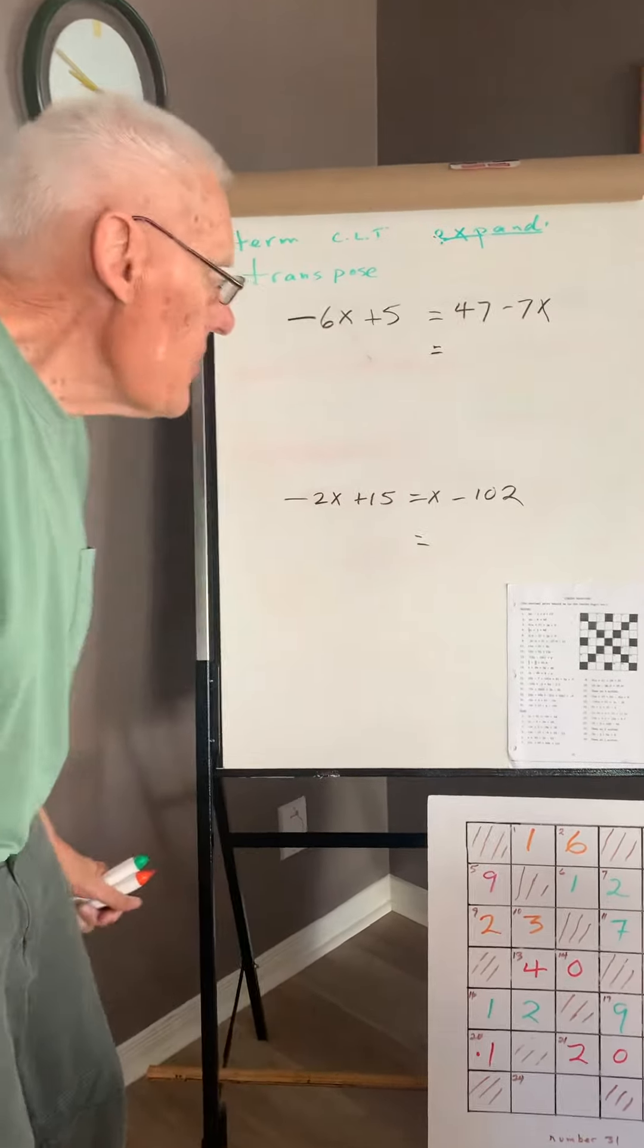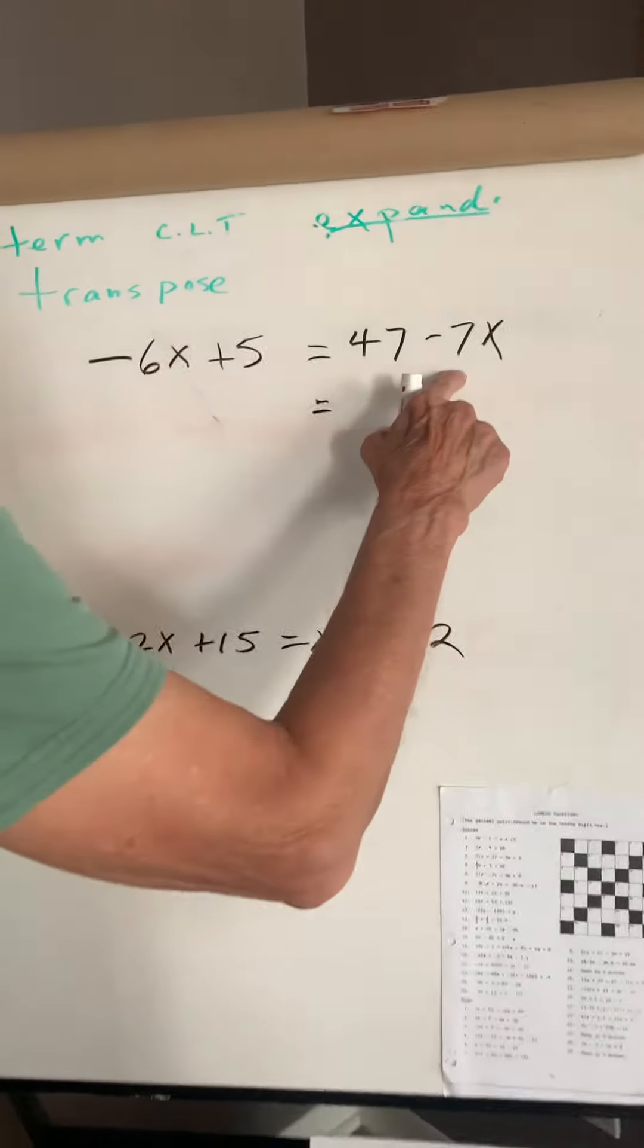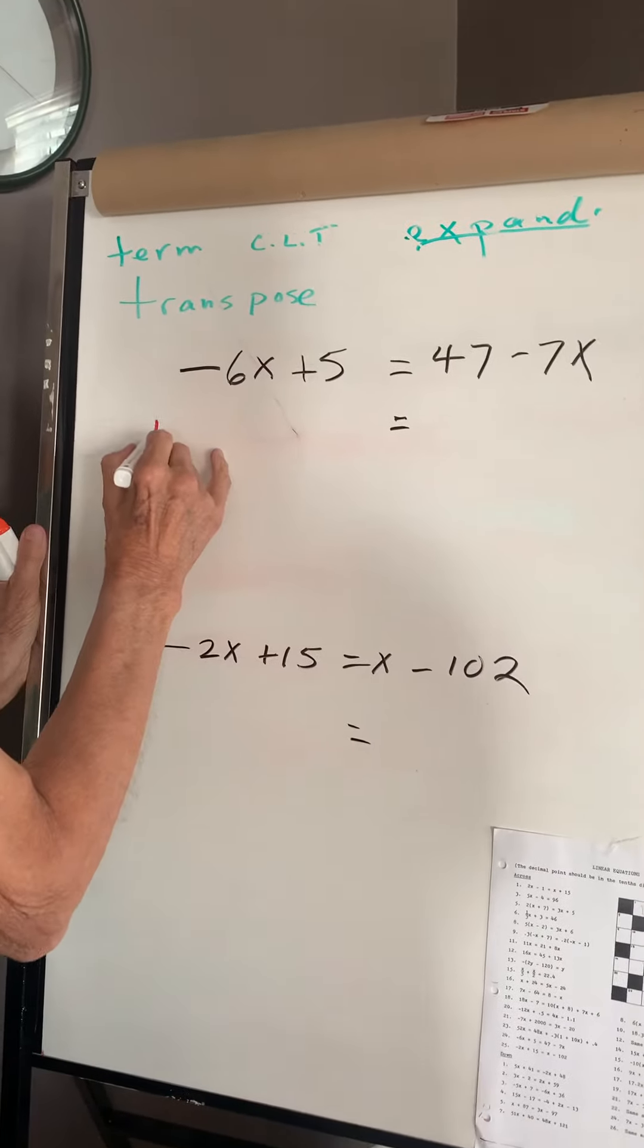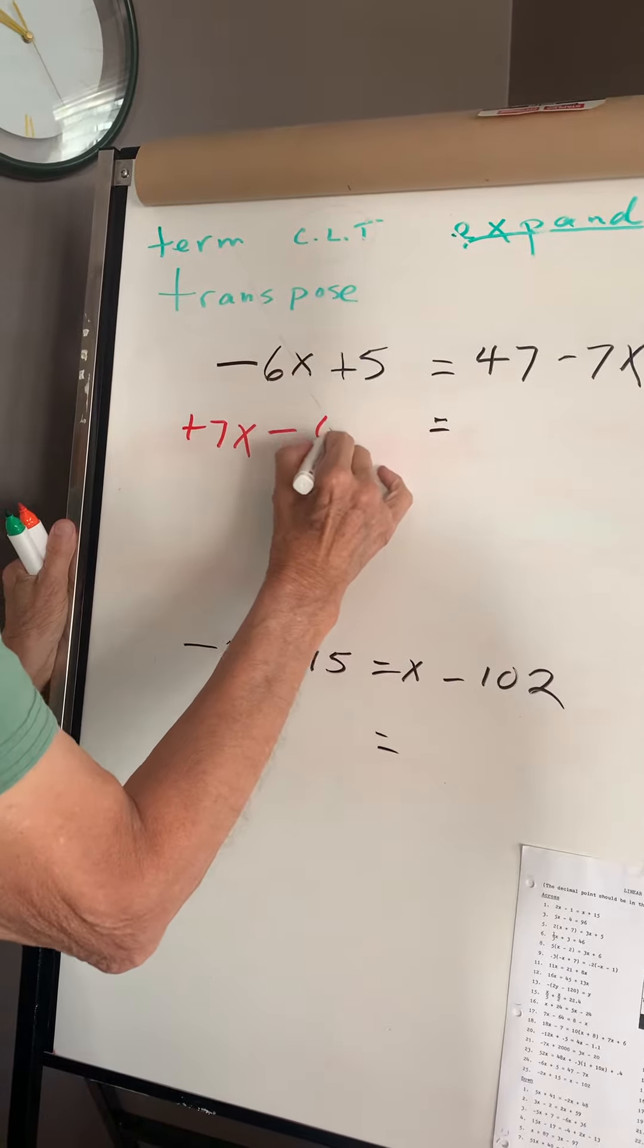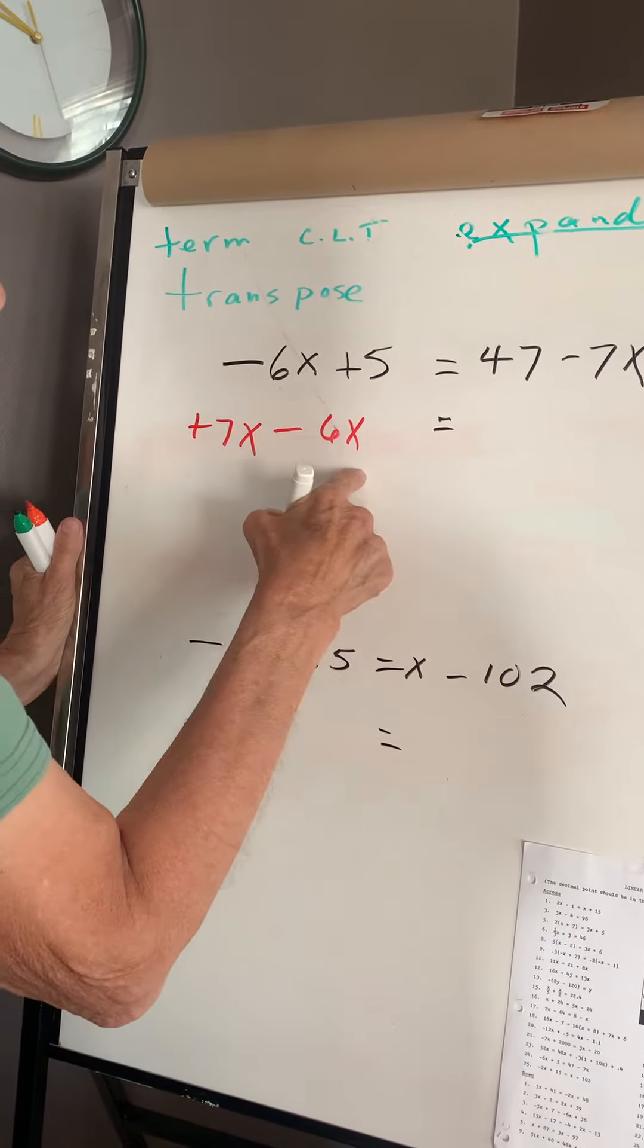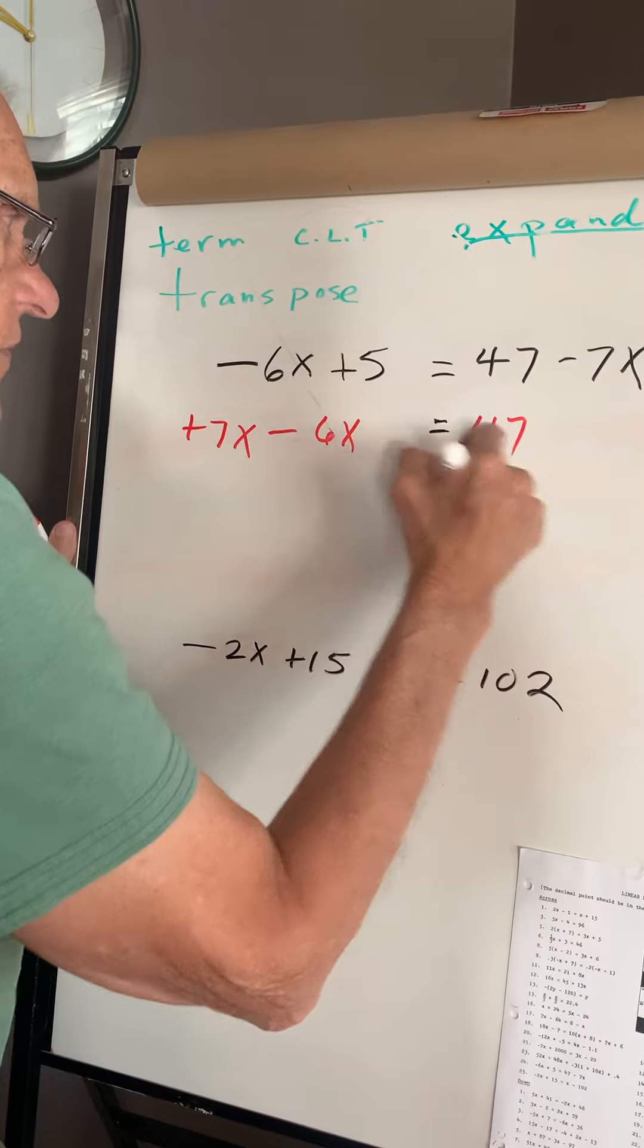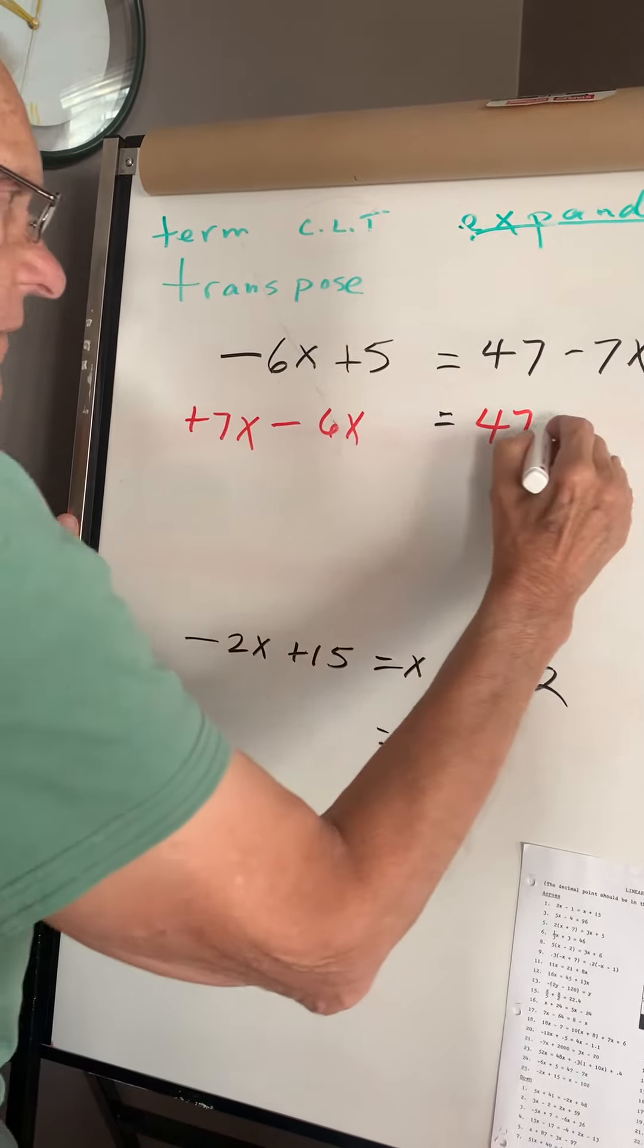Solving problems by transposing. The negative 7x is going to become positive 7x. This one is negative, so you can see that my answer is going to be positive. Don't move the 47. Transpose the 5.